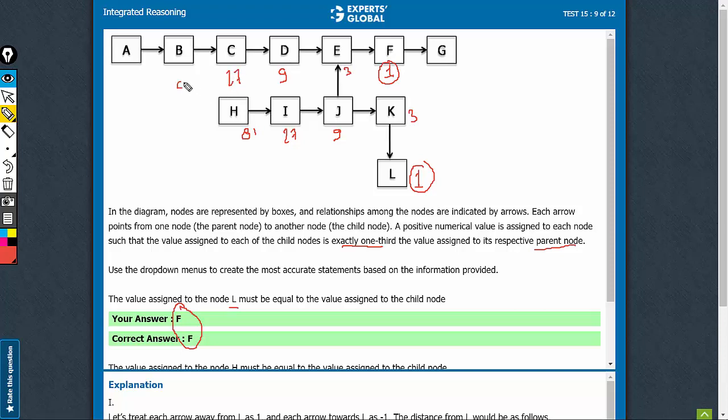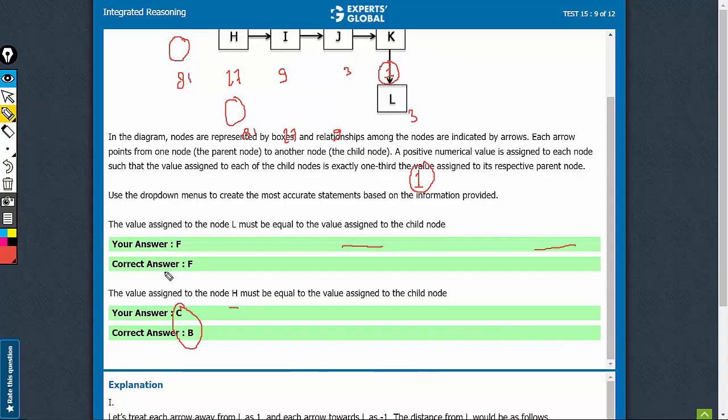Parent to 27 is 81. So B has the same value as H. The answer to the second part of the question must be B. That's the right answer. The right combination of answers is B and F.